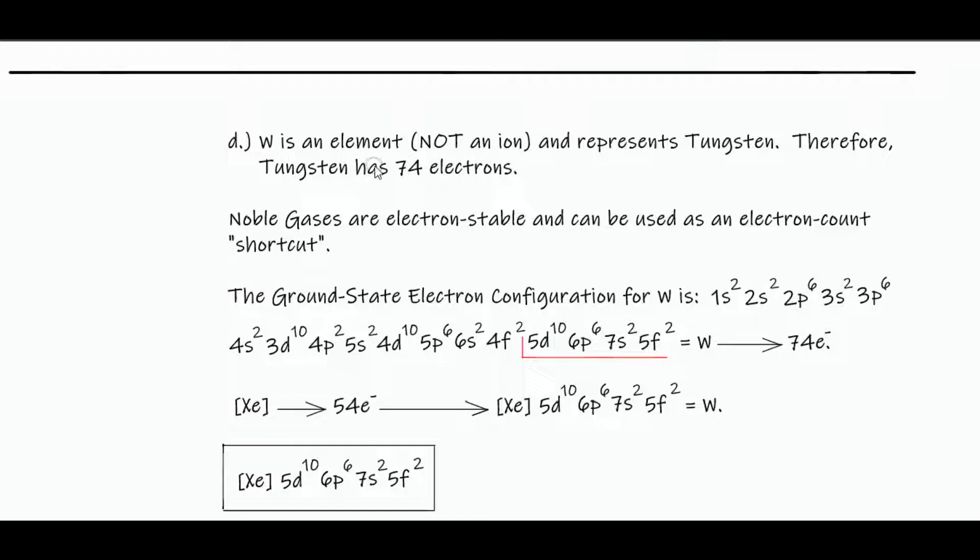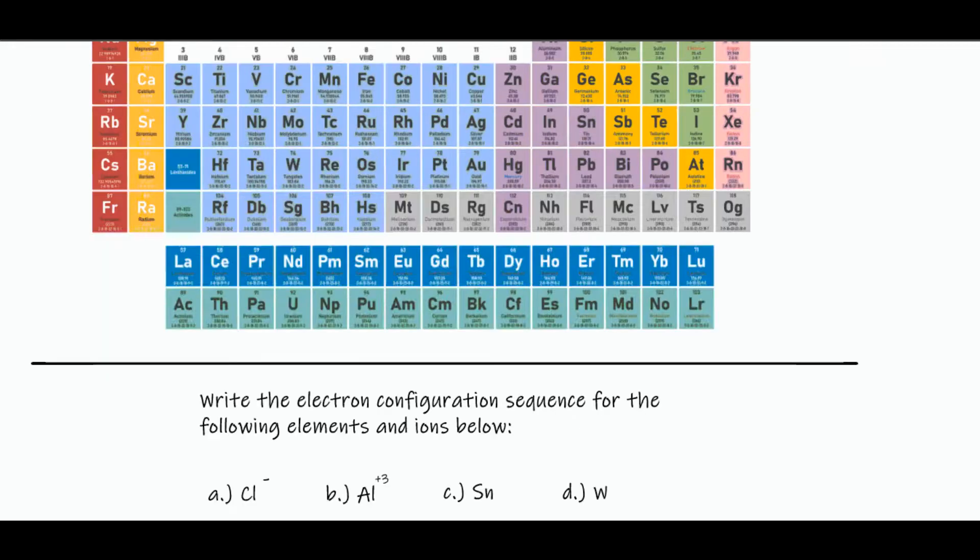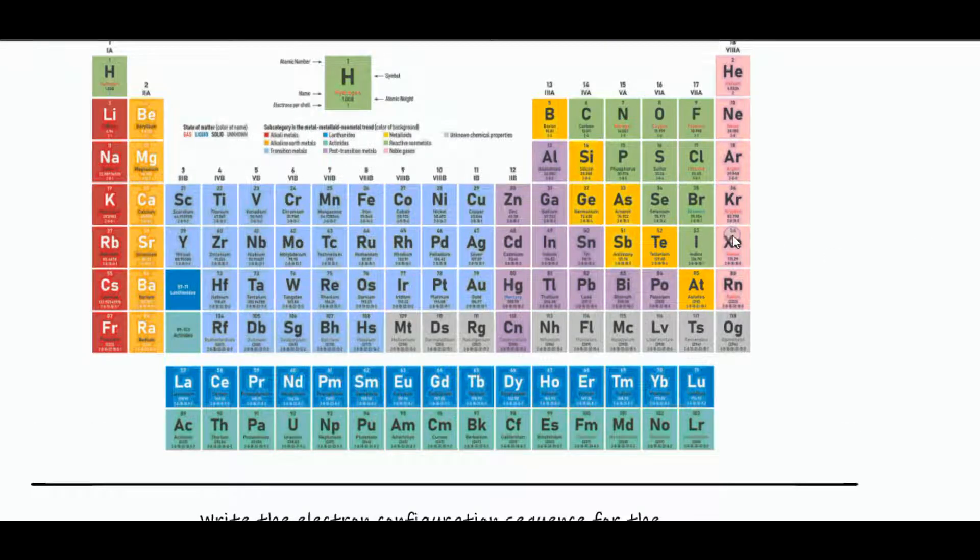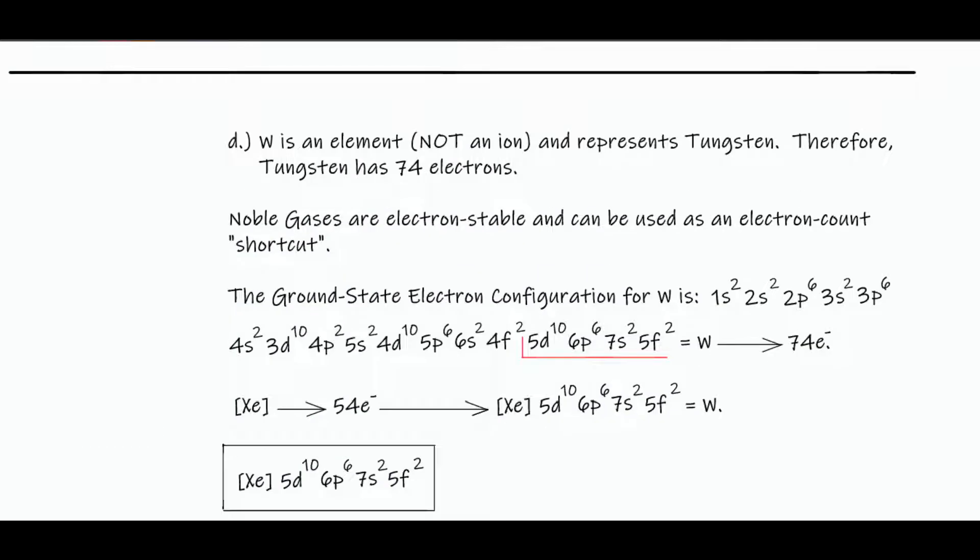So W, tungsten, is an element, not an ion. Therefore, tungsten has 74 electrons. We start with xenon, the noble gas shortcut. So xenon is 54 electrons. If we continue on, we'll make it to tungsten. So you can select xenon, 54 electrons.